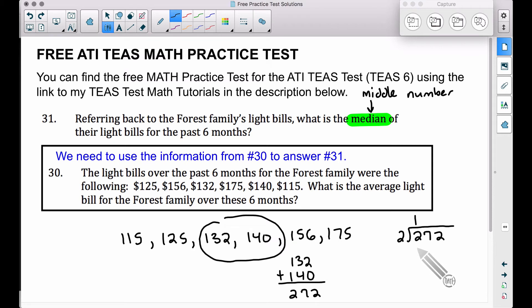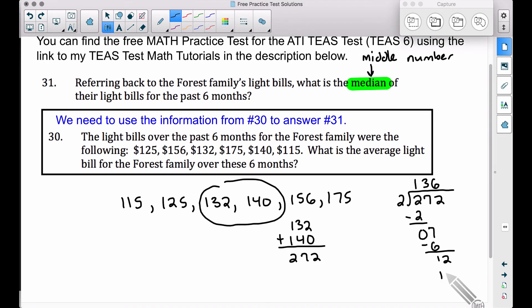Two goes into two one time with the remainder of zero. Bringing down our seven, two goes into seven three times. Three times two is six, we have a remainder of one. Bringing in our two, we have 12. Two goes into 12 six times. And if you want to talk about our remainder here, six times two is 12, we do not have one.